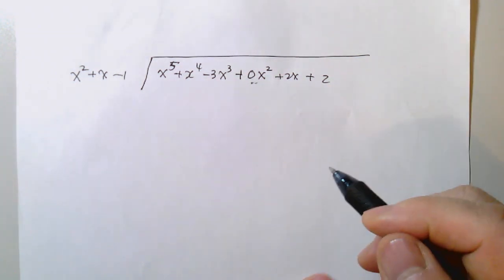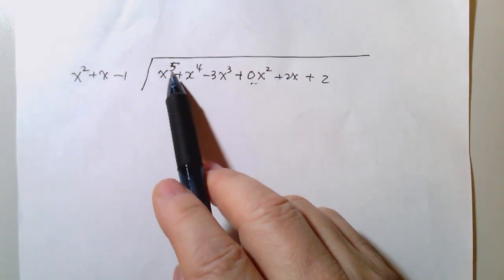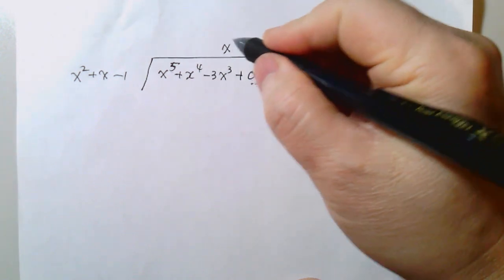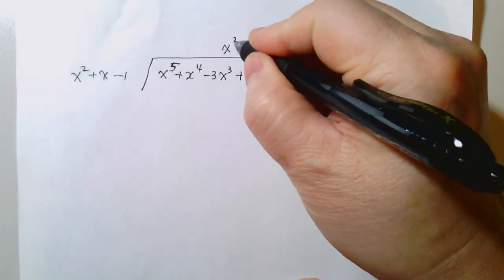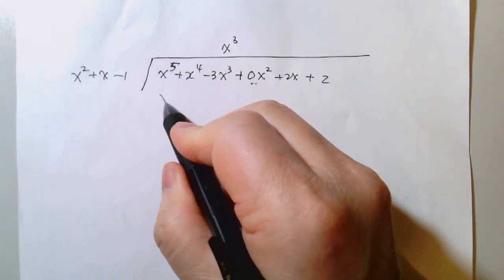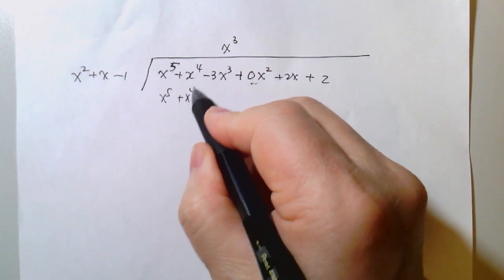And now you can see here that's x squared, that's x to the fifth, you use x to the third, and so here, then you got x to the fifth, x to the fourth, minus x cubed.